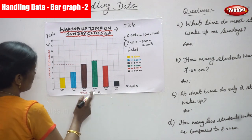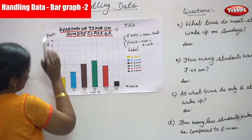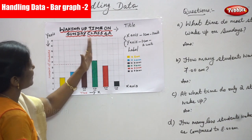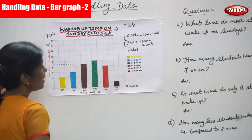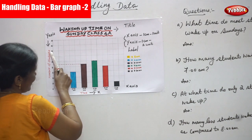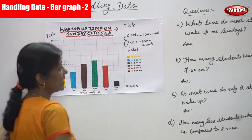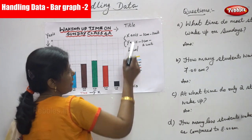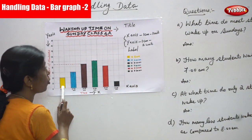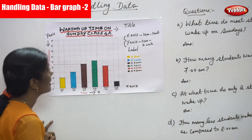This is time — I have taken time on the x-axis and number of students on the y-axis. The title is "Waking Up Time on Sunday, Class 4A." I have already told you about x-axis and y-axis — these come under a label. So x-axis: 1 cm is equal to 1 unit. And y-axis: 1 cm is equal to 2 units.